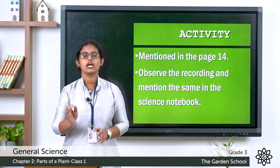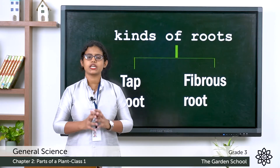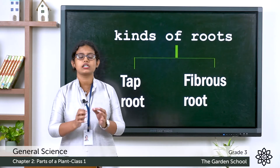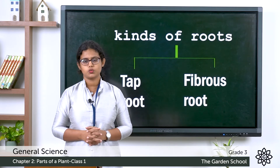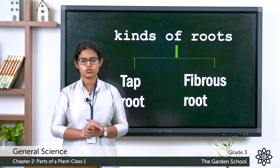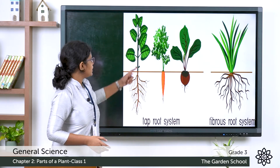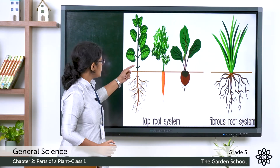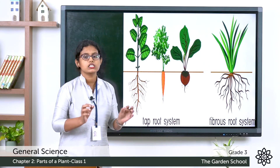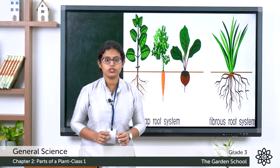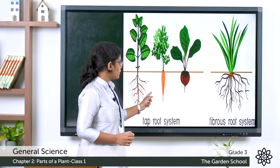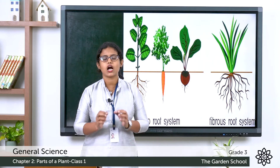Now let's see the different kinds of root. There are two types: tap root and fibrous root. In most plants there is a main root, and from the main root there are fine roots growing — such roots are called tap root. In the picture you can see the main root growing vertically with fine roots growing from it. Carrot and beetroot also have tap root. Mango tree is another example of a plant with tap root.